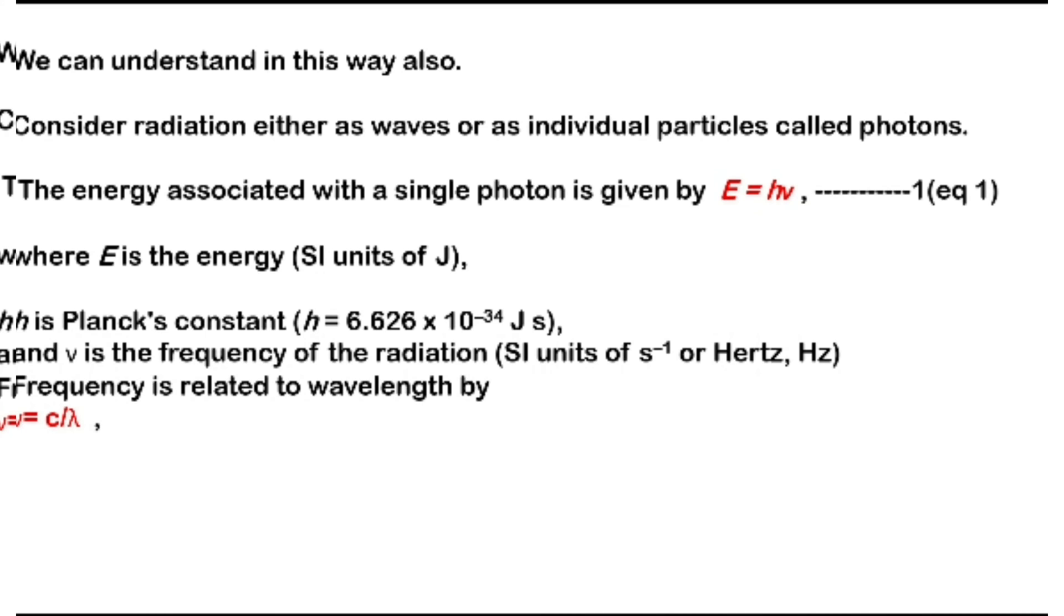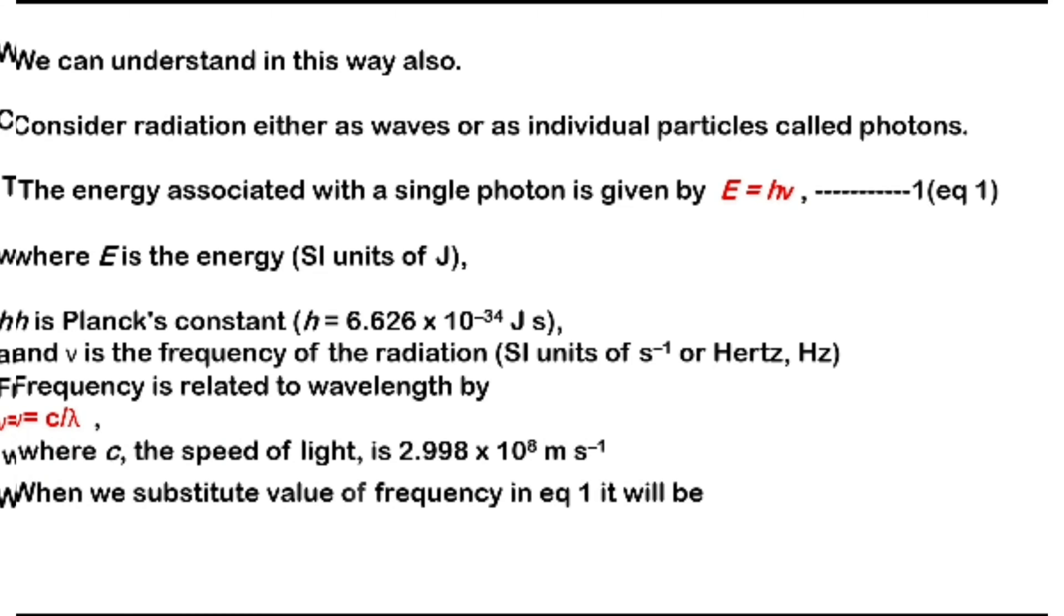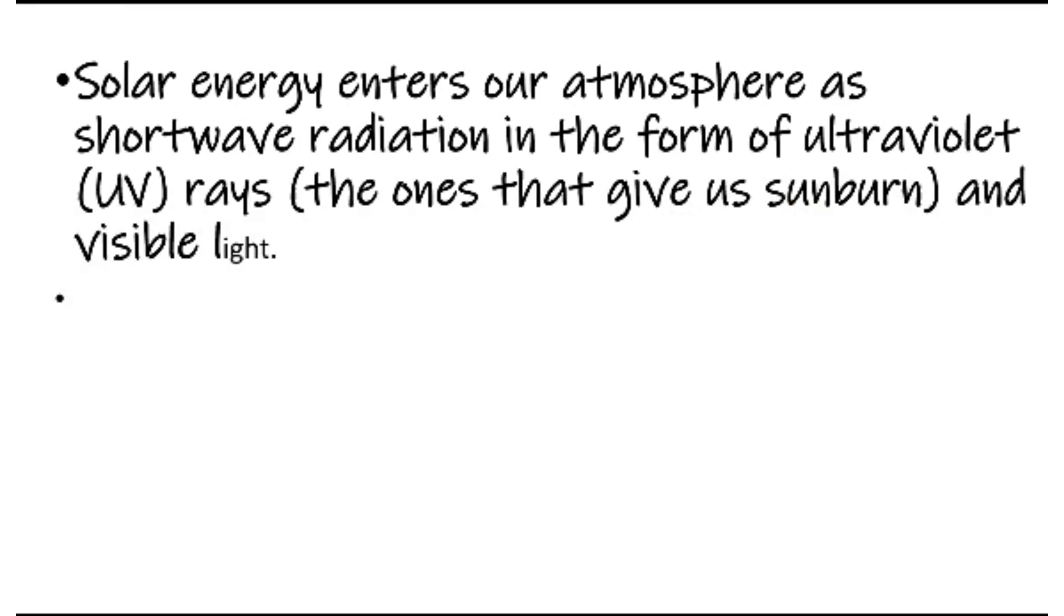Frequency is related to the wavelength by this equation also. Frequency equals speed by wavelength. When we substitute the value of this frequency in the first equation, we get another relation that is E equals hc by lambda. When we see this one, we can understand that high energy waves will have higher speed and lower wavelength whereas low energy waves will have lower speed and higher wavelength.